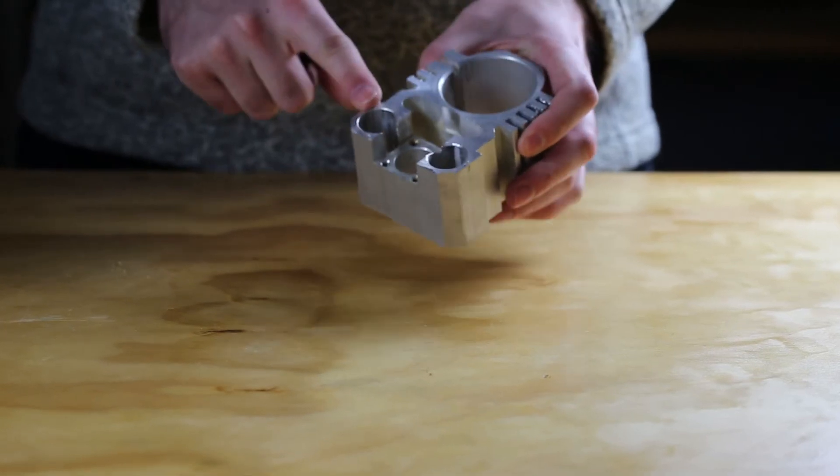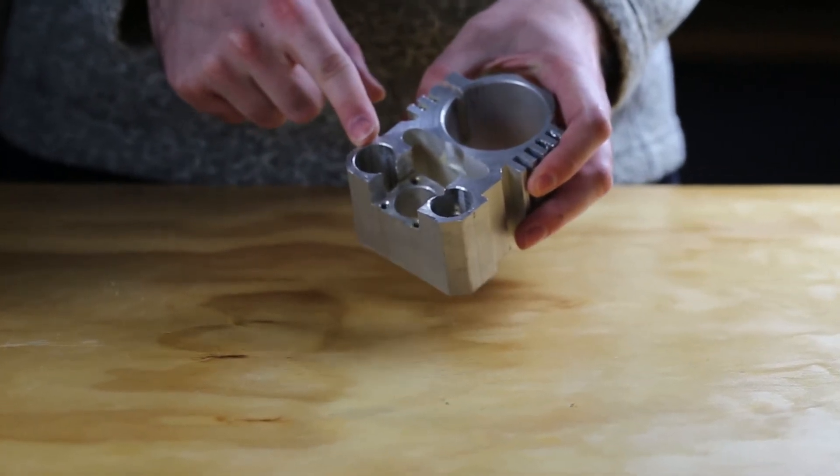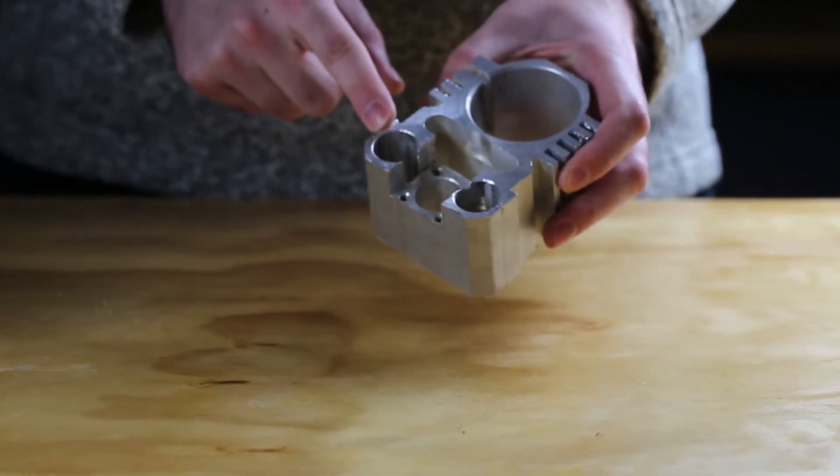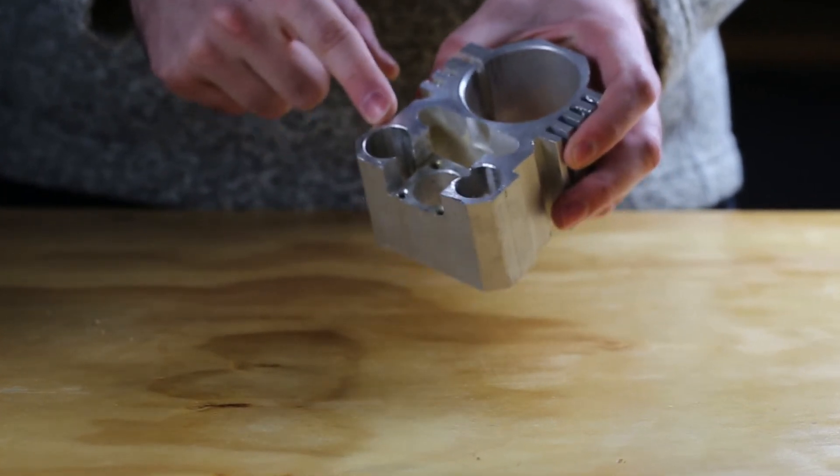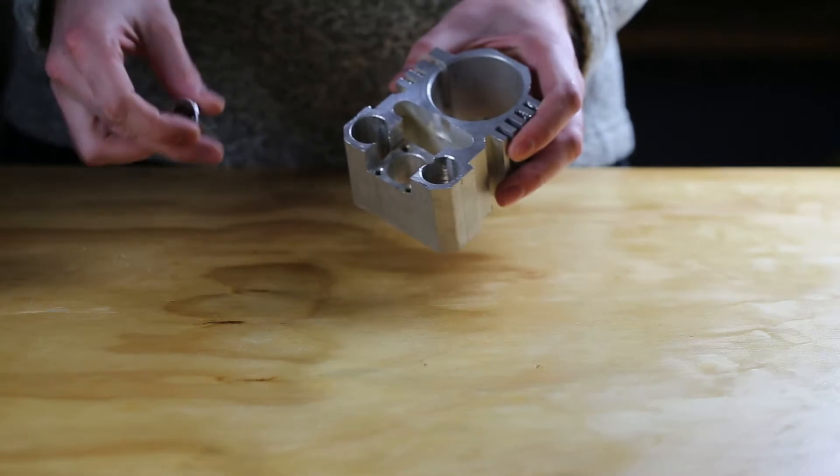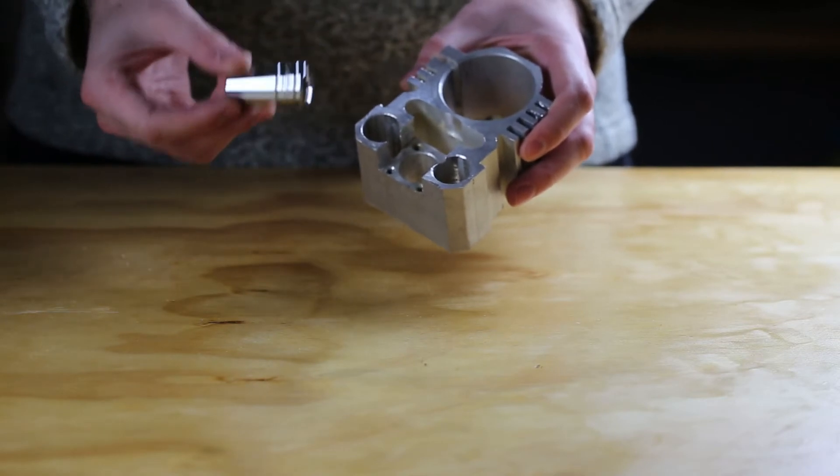The next step I took was to press the two linear bearings out of the old carriage. One very important note is that these bearings were not easy to remove. In fact, the only way that I could remove them was to use an arbor press and a socket as a press tool.